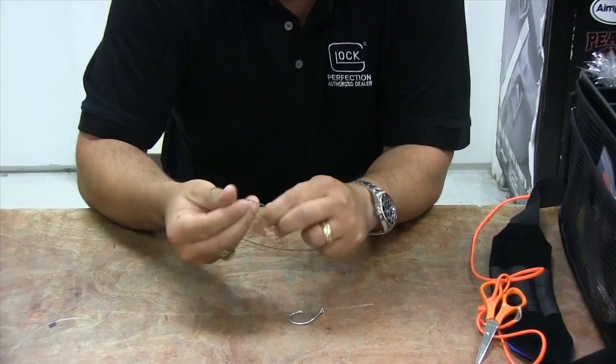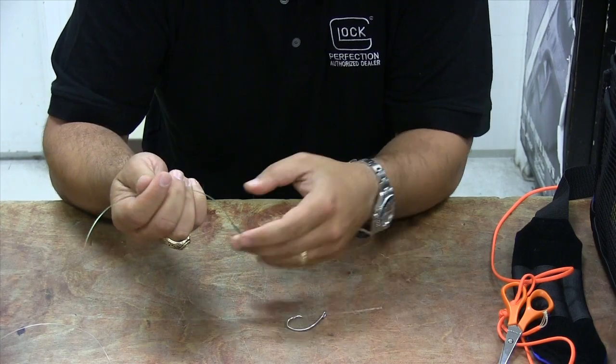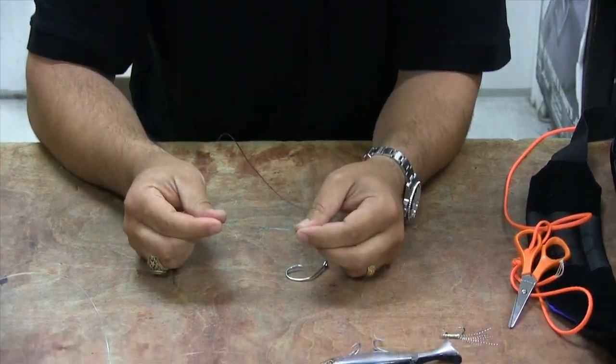Take it. We're going to tie our double overhand, double overhand, pull it on the monofilament. You'll see how we form that figure eight.